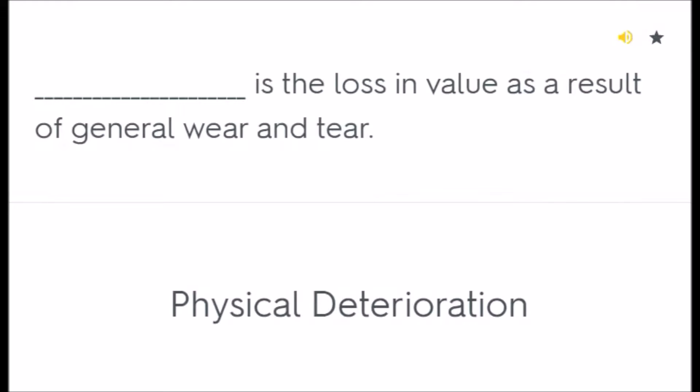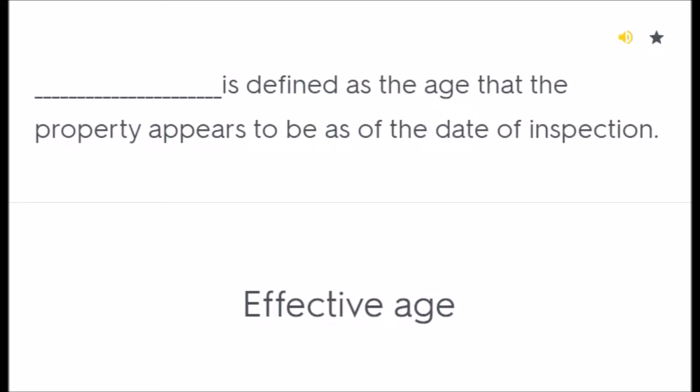Blank is the loss in value as a result of general wear and tear — physical deterioration. Blank is defined as the age that the property appears to be as of the date of inspection — effective age.